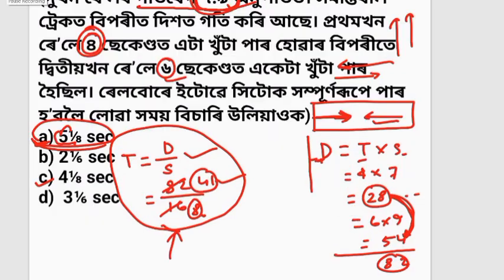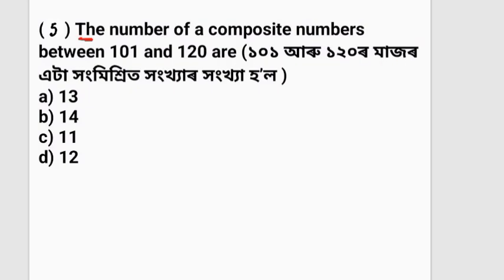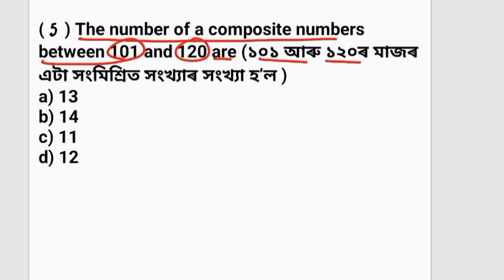Next question: The number of composite numbers between 101 and 120. We identify the prime numbers in this range: 101, 103, 107, 109, 113 are prime. The remaining numbers are composite.